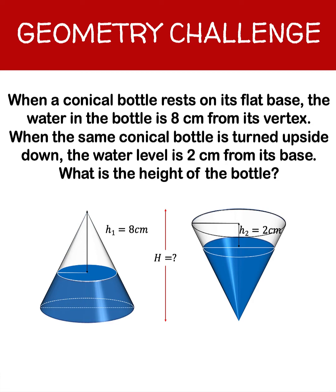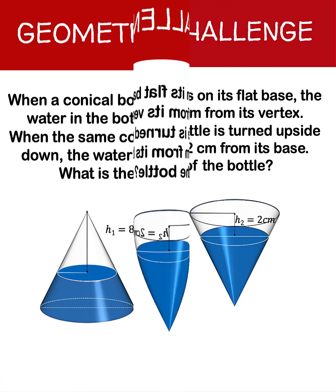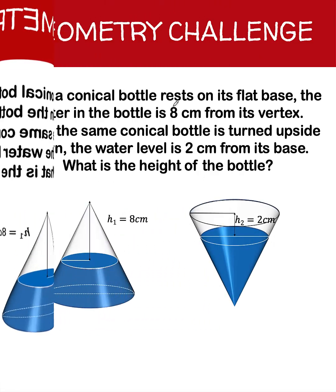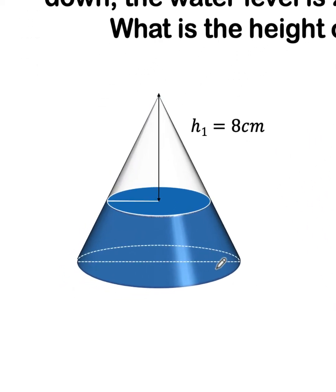Hey everyone, here's our math problem for today. When a conical bottle rests on its flat base, the water in the bottle is 8 centimeters from its vertex. Think of this blue shaded region as the representation of the water, and the empty space inside the cone represents air.